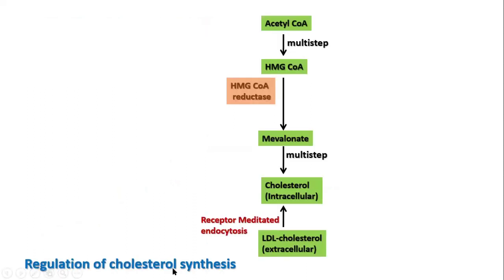Next is the regulation of cholesterol synthesis. In mammals, cholesterol production is regulated by intracellular cholesterol concentration, the supply of ATP, and hormonal regulation — specifically the insulin-to-glucagon ratio. There are two types of regulation: short-term regulation and long-term regulation. The main regulating step is the conversion of HMG-CoA to mevalonate by HMG-CoA reductase, which is the committed step in cholesterol biosynthesis.